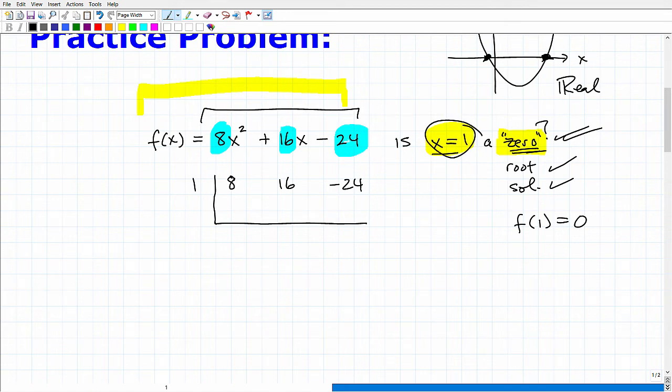Now I'm going to be synthetically dividing this function by 1, which is effectively doing all of this right here is the same thing as evaluating this function for 1. So we already determined that f of 1 was equal to 0. But here is, again, synthetic division, which is doing the same thing. So the way this works, you first, this first number, this first value, you drop down like so, 8.